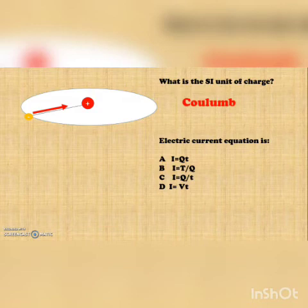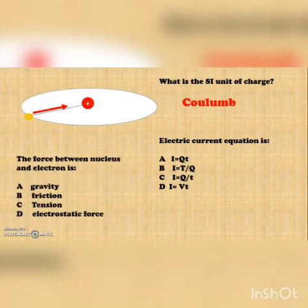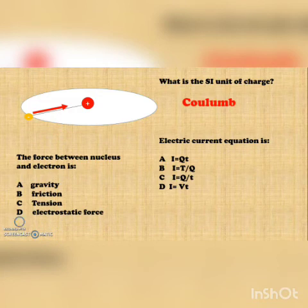The electrical current equation — options: I = Qt, I = T/Q, I = Q/T, or I = Vt — the correct option is I = Q/T.